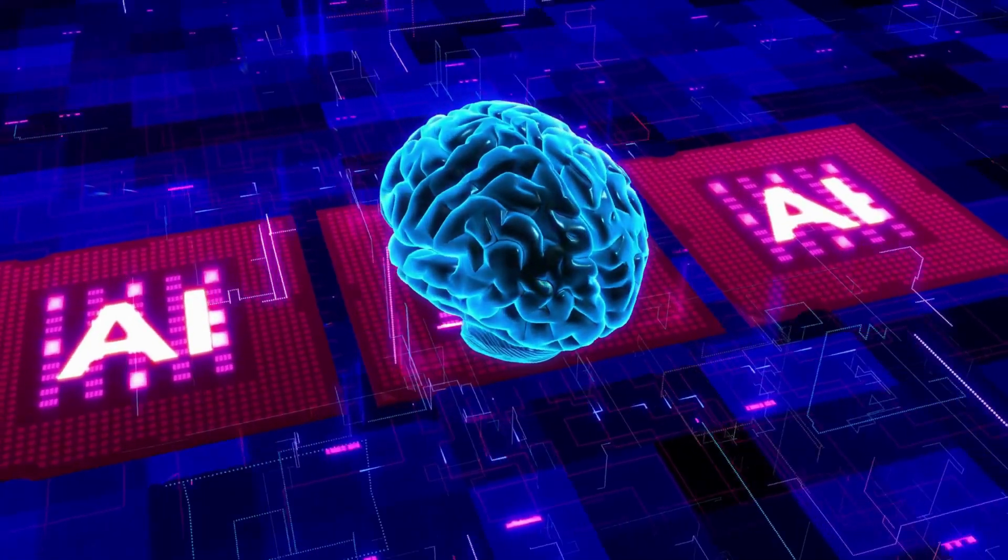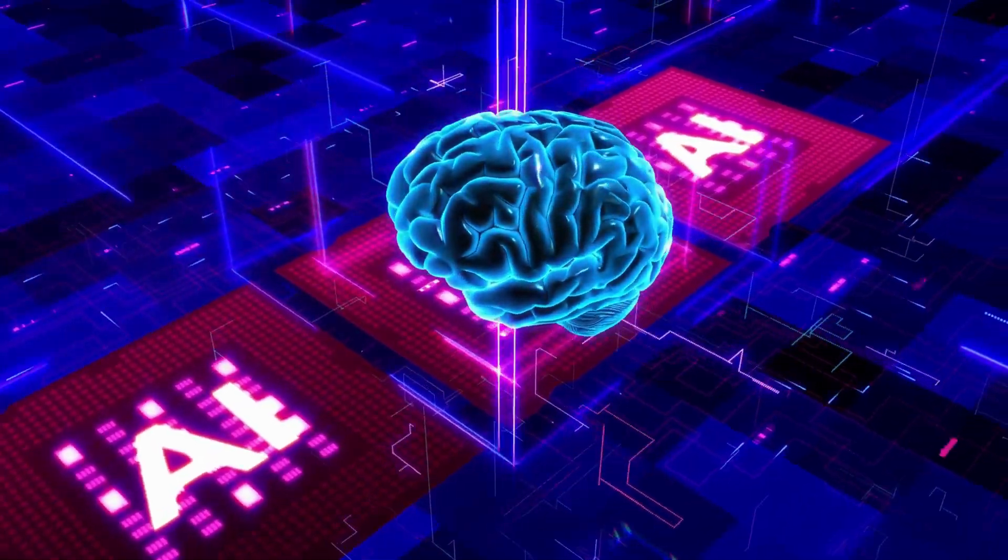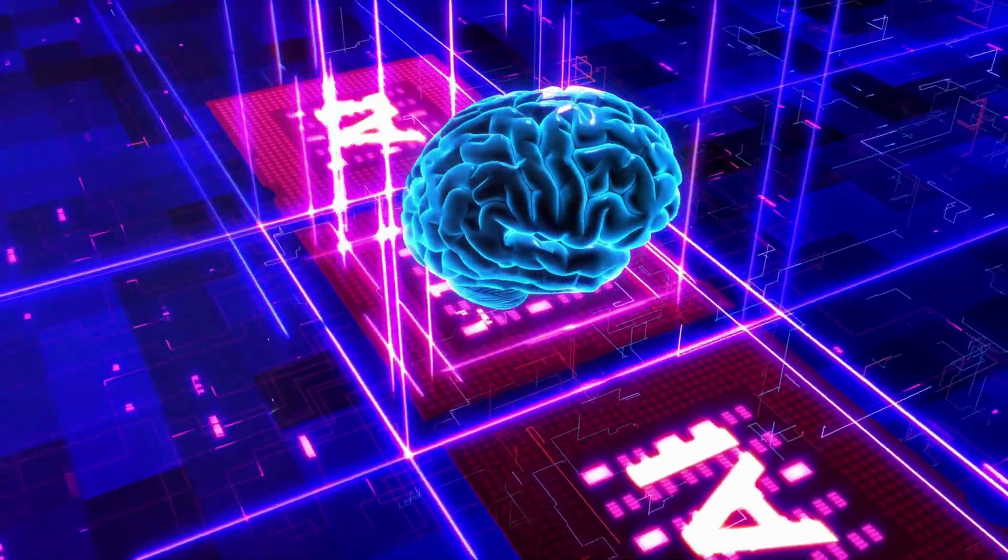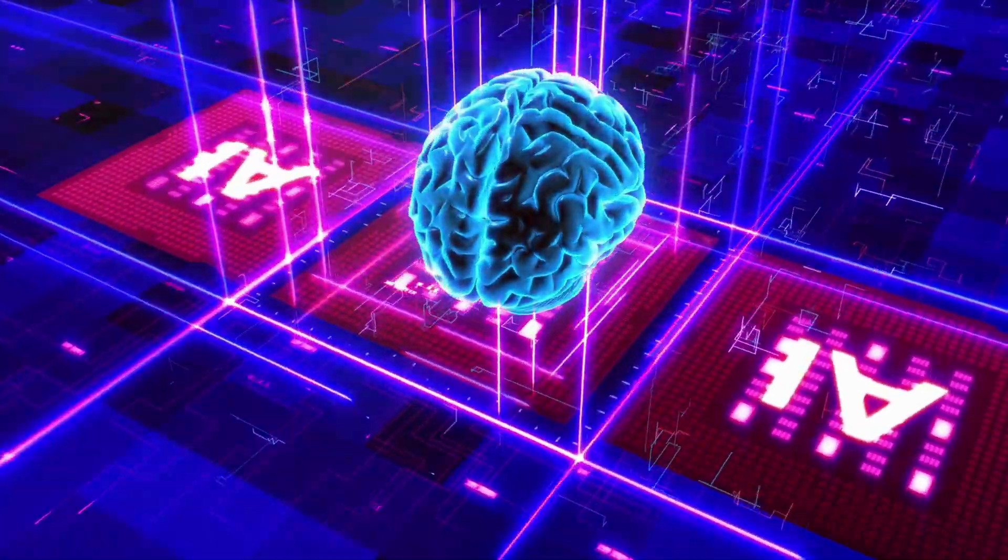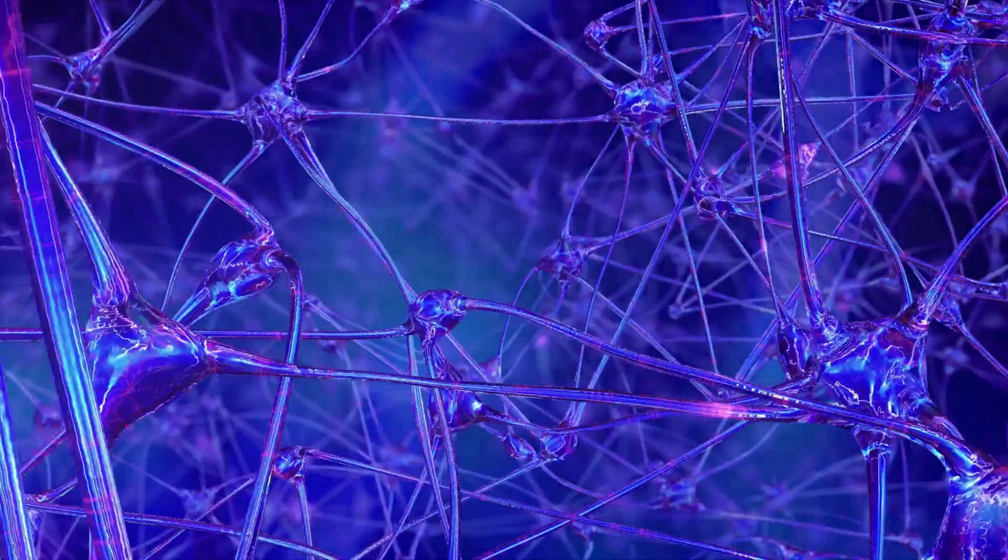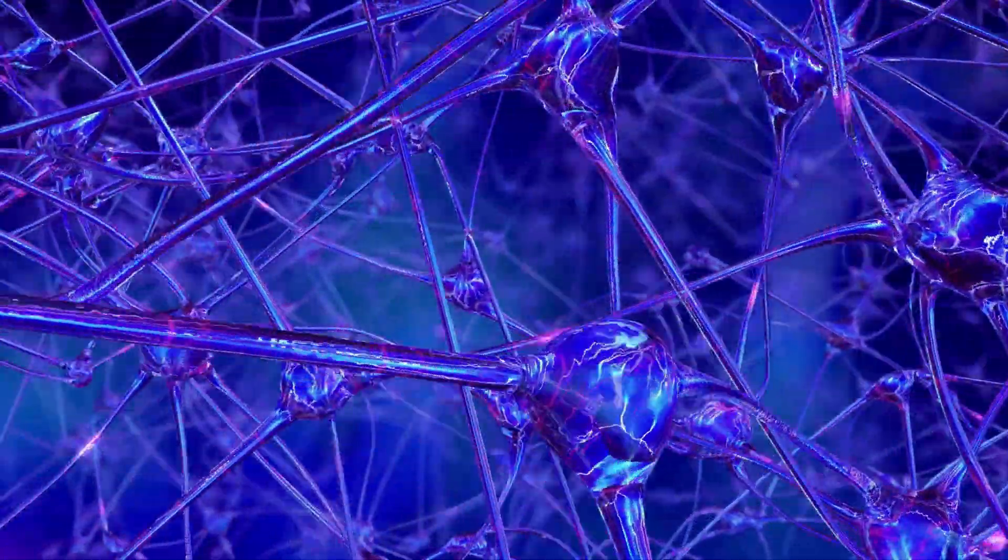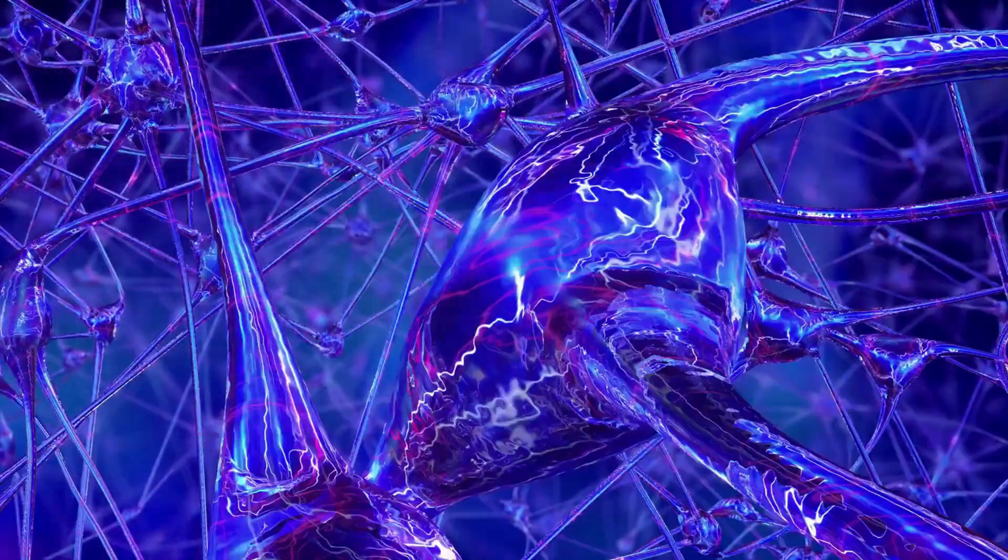At the heart of Neuralink's ambitious mission lies the concept of brain-machine interfaces, or BMIs. These are essentially devices that enable a direct communication pathway between a wired brain and an external device. Neuralink's approach to BMIs is quite fascinating. They plan to implant extremely thin threads, thinner than a human hair, into the brain.